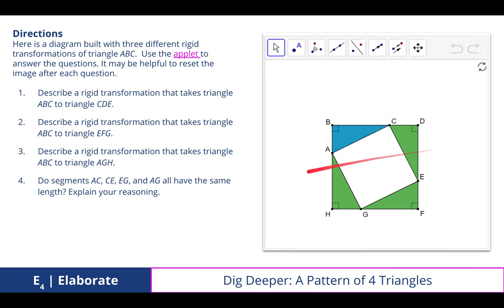All right, digging deeper: A pattern of four triangles. Here's a diagram built with three different rigid transformations of triangle ABC. Using this applet to answer the questions, it may be helpful to reset the image each time, but we're going to see what transformations map the pre-image, which is in blue, onto the other three images, which are in green. So try that on your own time, but we did this together in class.